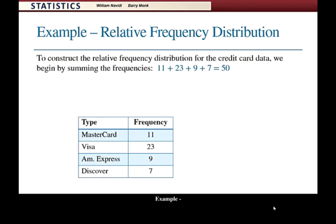To construct the relative frequency distribution for the credit card data, we begin by summing the frequencies: 11 plus 23 plus 9 plus 7 equals 50.